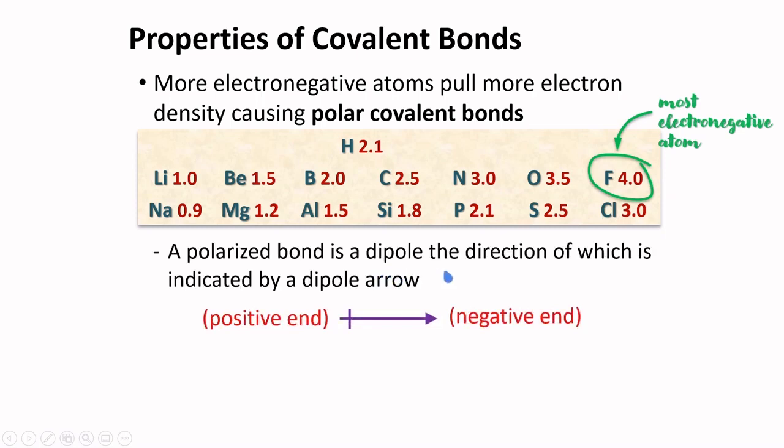A polarized bond is a dipole, the direction of which is indicated by a dipole arrow. Electronegative atoms in a bond tend to pull electrons towards itself as indicated by this arrow. It will have a partial negative charge because of the increase in electron density. And there will be a partial positive charge on the atom that lost electron density.